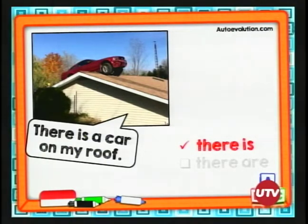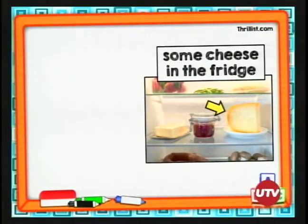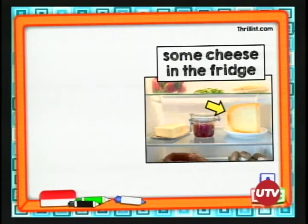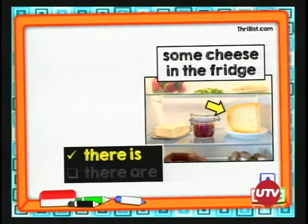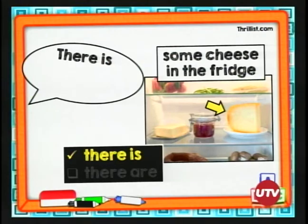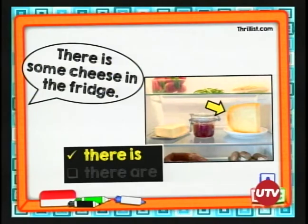Miren que there is lo podemos usar para singular aunque no suene tanto a singular. Dice: "some cheese in the fridge". ¿Qué significa? El queso — tenemos un poco de queso en el refrigerador, algo de queso en la refri. ¿Con cuál podría hacer la oración? "Cheese" es la palabra que no podemos hacer plural — por lo tanto, there is. Quedaría: "There is some cheese in the fridge" — hay un poco de queso en la refri.